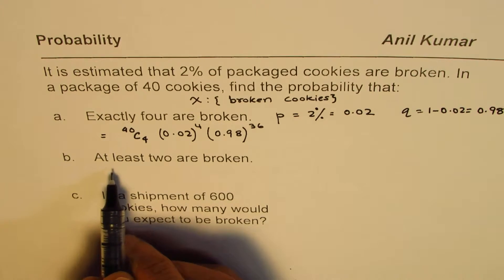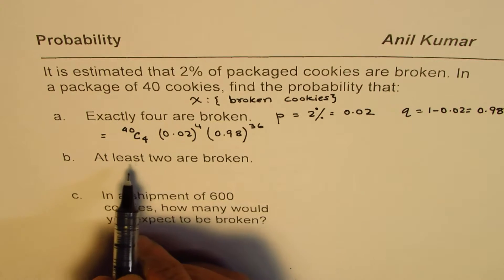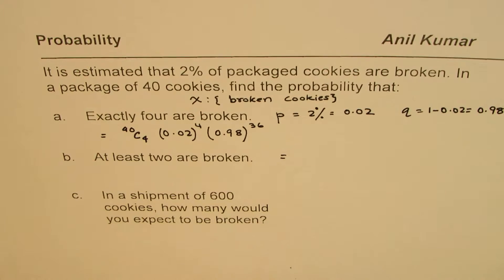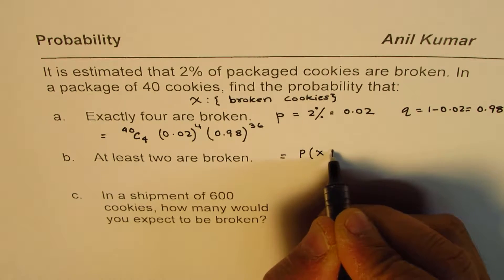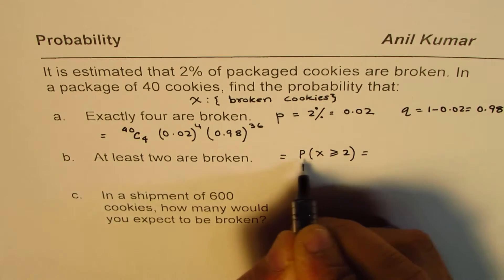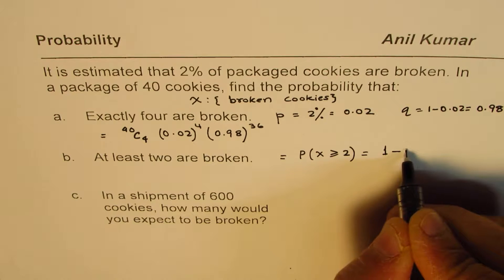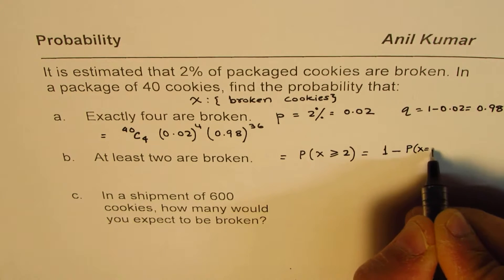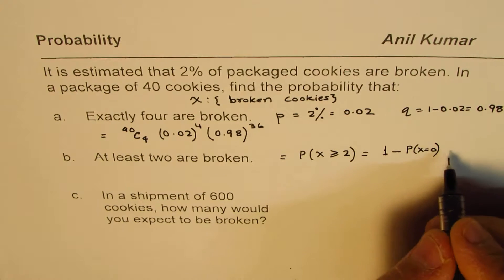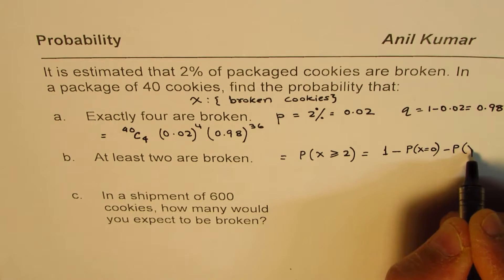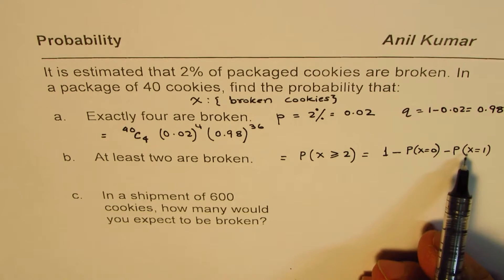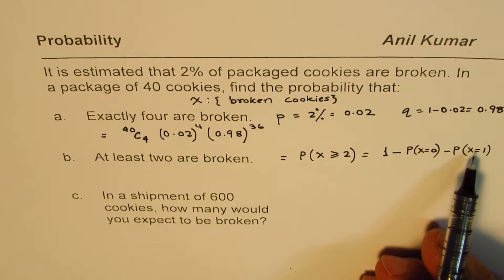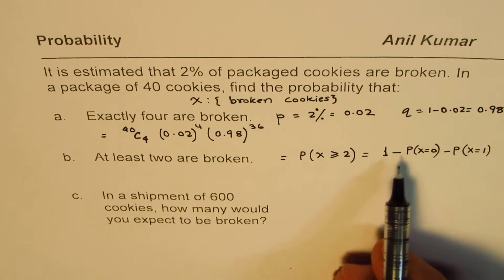Now, at least 2 are broken. When we say at least 2 are broken, it really means that 2, 3, 4, up to 40. When we say probability for X to be greater than or equals to 2, we could write this as equals to 1 minus probability when X equals 0, that means none is broken, or minus the probability when X equals 1. If we take away the probabilities for none or 1 broken, then we are left with all at least 2 broken. This is a better way of doing it.